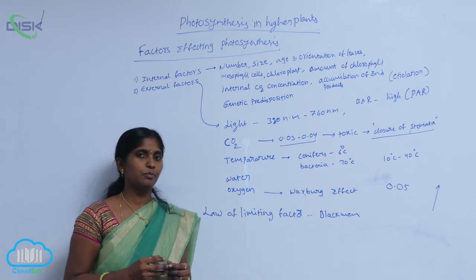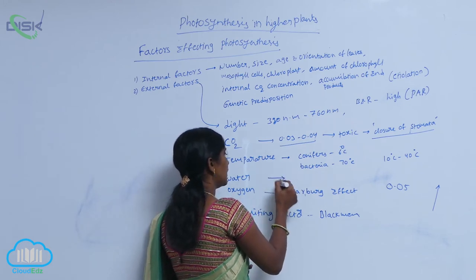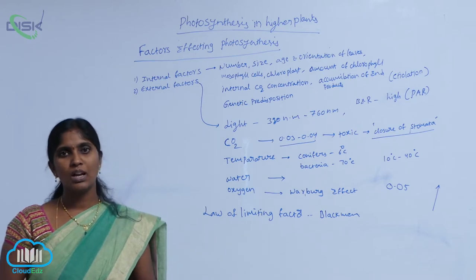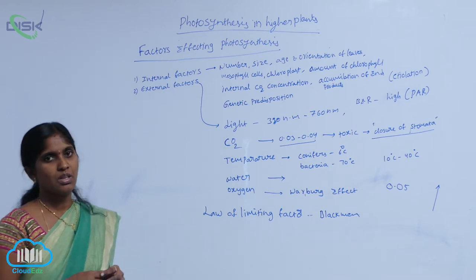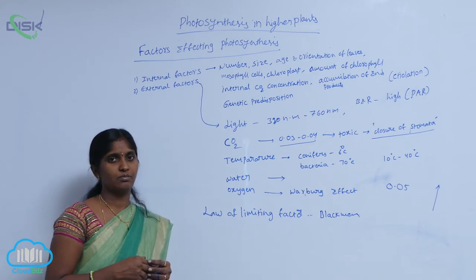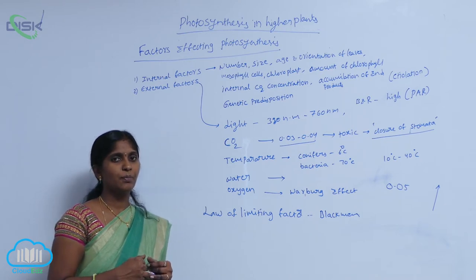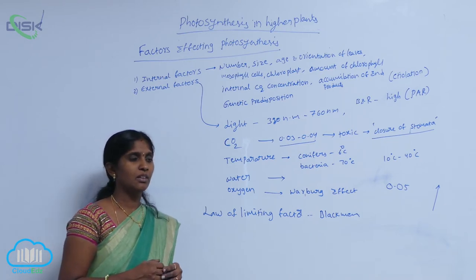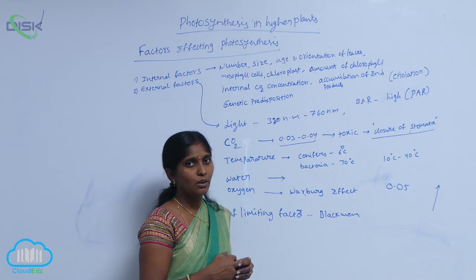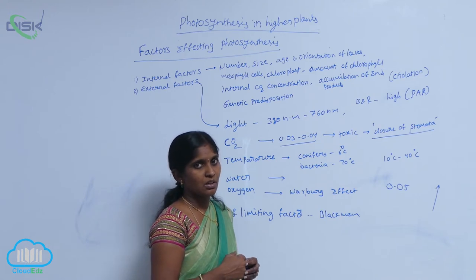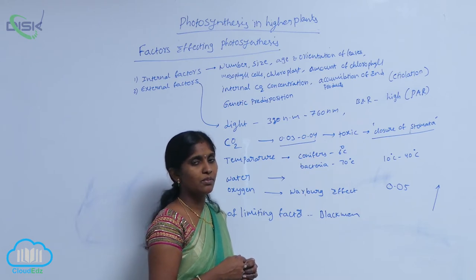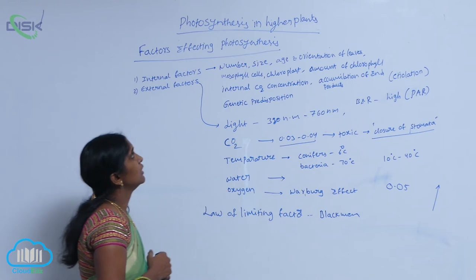Next is water. Water is the most important element — 60% of the cell volume is occupied by water. In the presence of water, the enzymes are activated and the reactions are mediated, because of hydrolysis reactions. Without water, there is no photosynthesis. So water is also one of the key elements for photosynthesis.